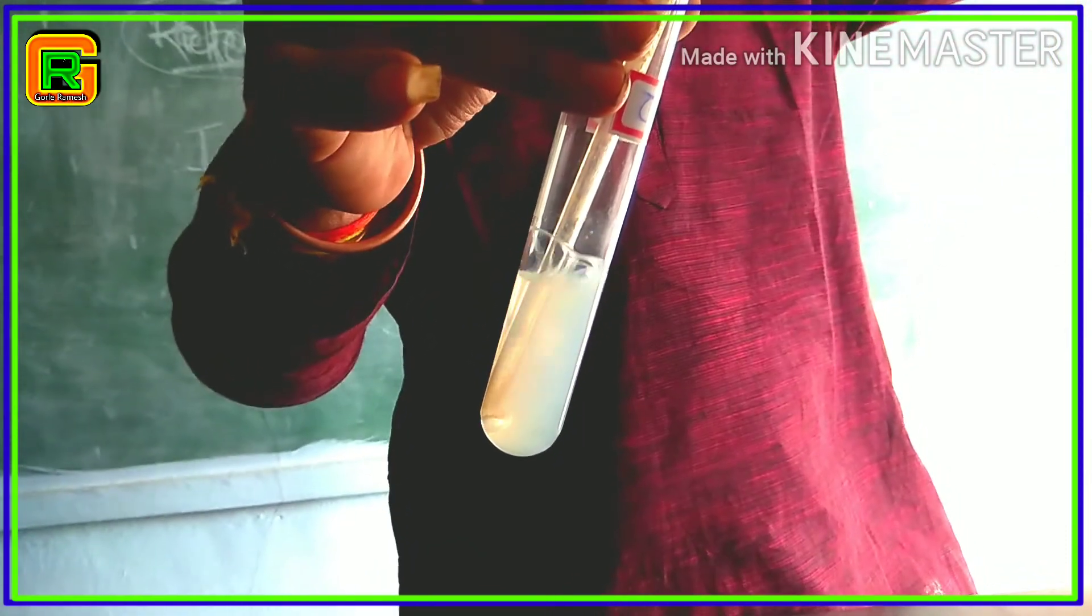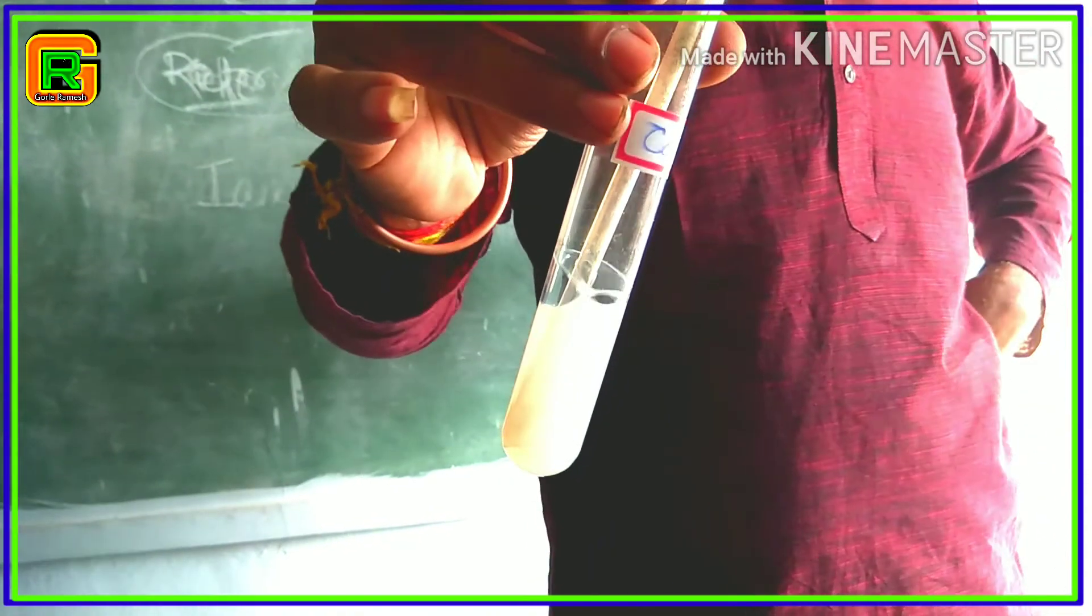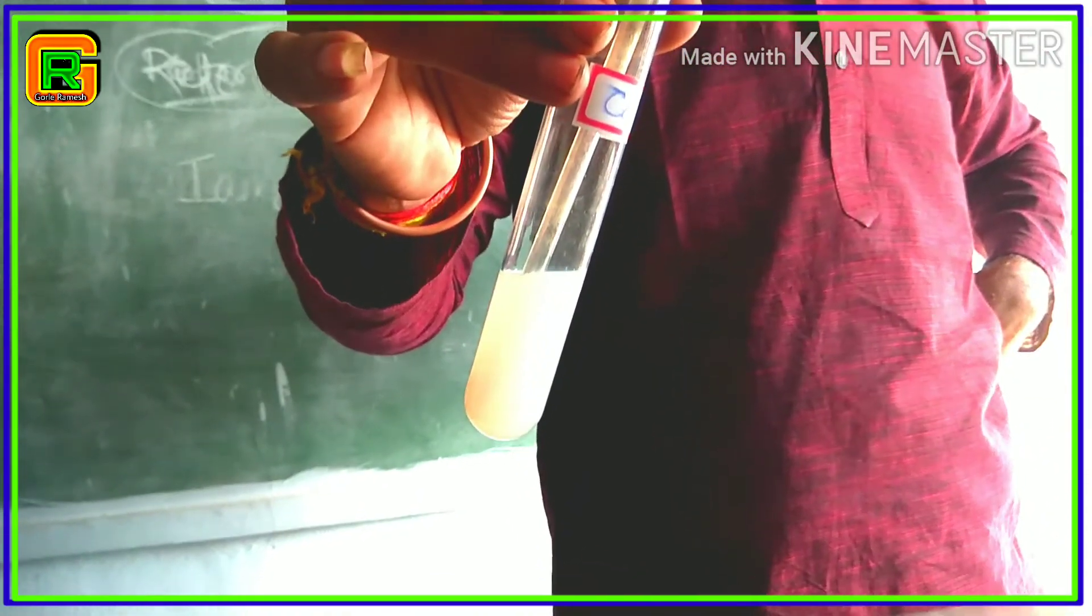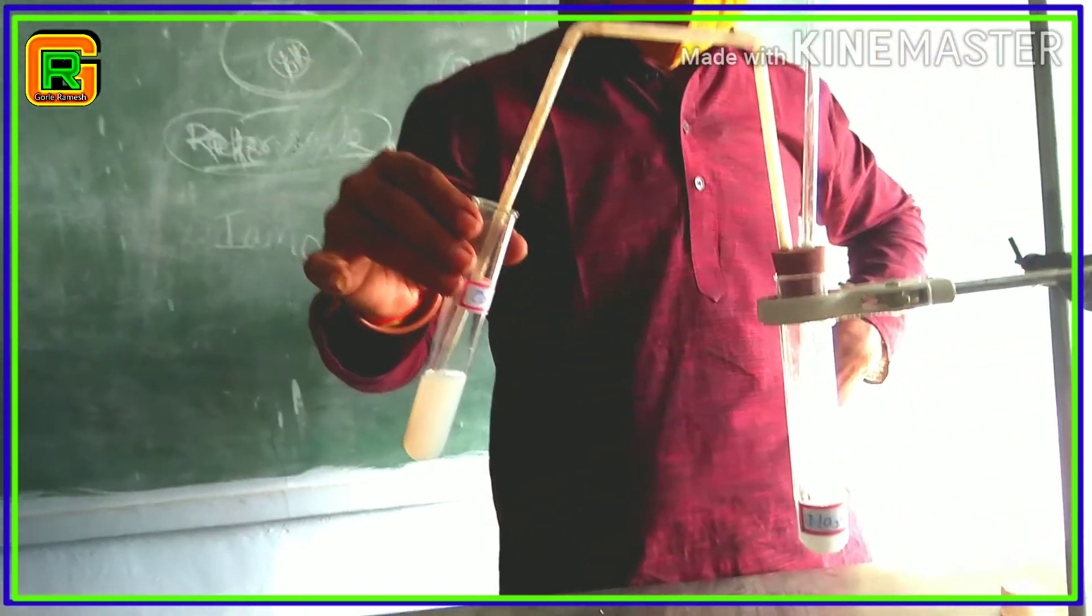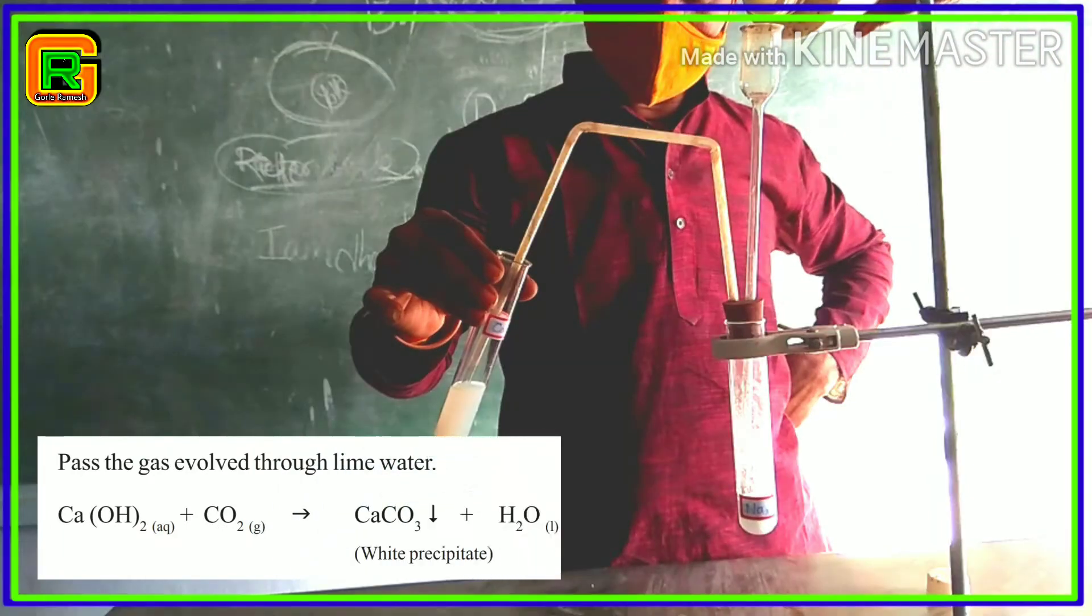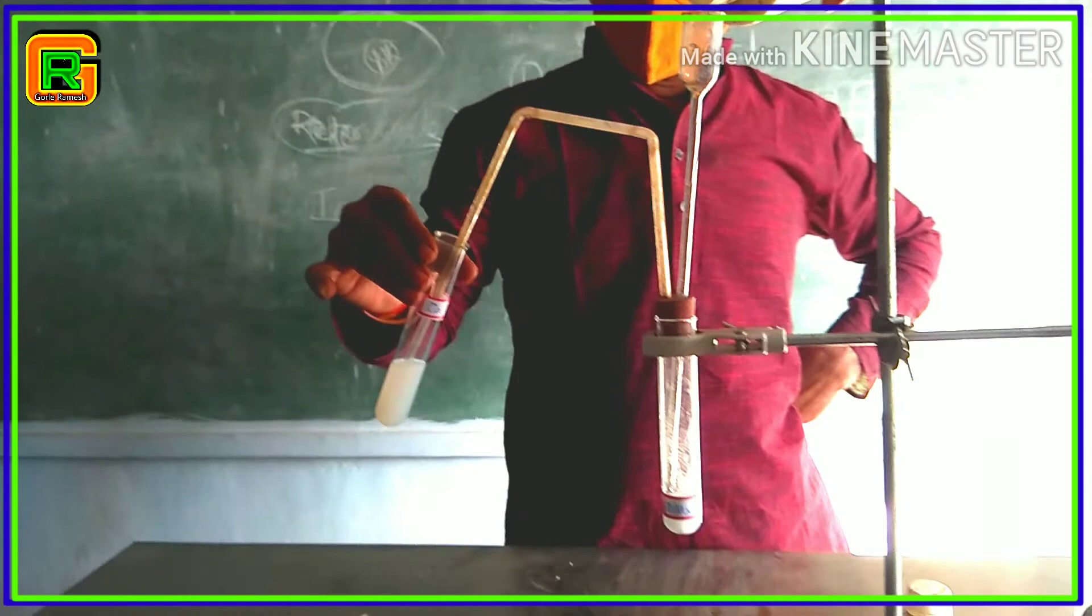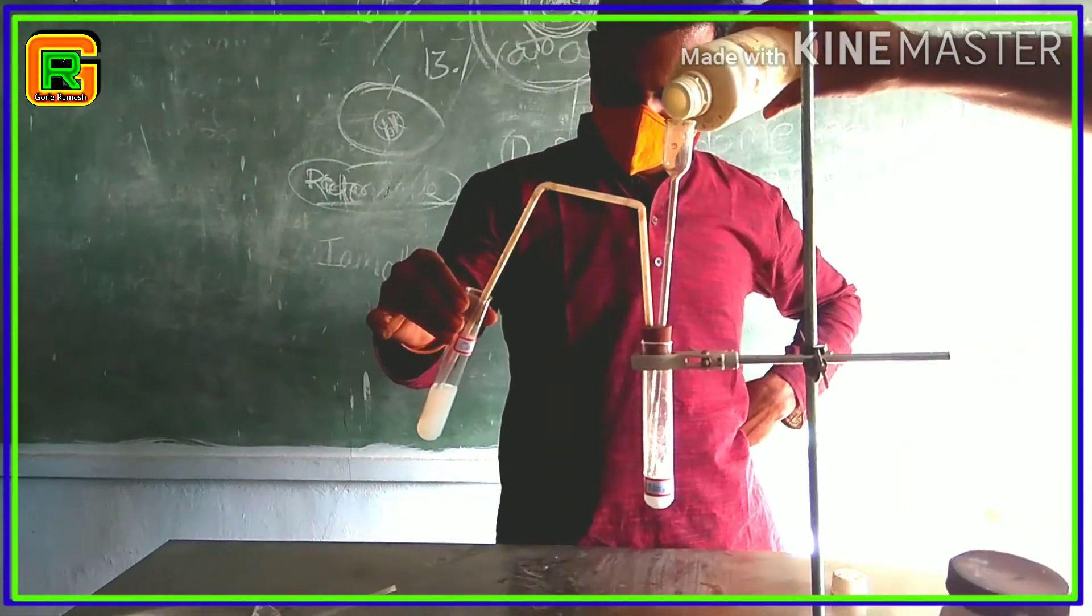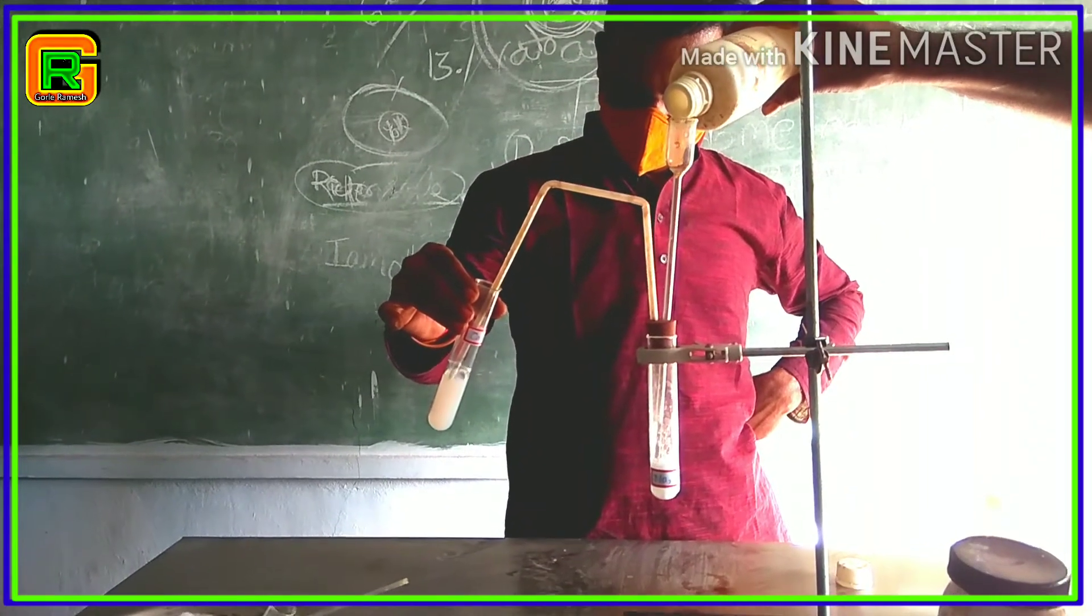Which gas turns the lime water into white colored precipitate? Yes, carbon dioxide gas turns the lime water into white colored precipitate. Here, lime water, that is calcium hydroxide, reacts with carbon dioxide gas and gives us white precipitate, that is calcium carbonate and water. In this experiment, hydrochloric acid reacts with sodium carbonate, gives us sodium chloride salt, water, and carbon dioxide gas.